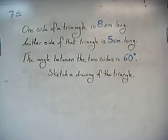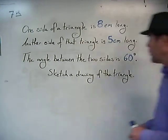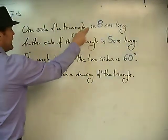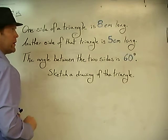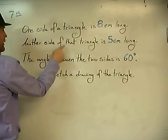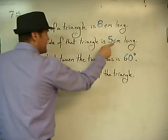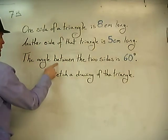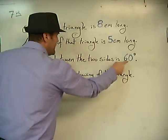Hello, Mr. Matthew here again. So we have a question up here on the board. One side of a triangle is eight centimeters long. Another side of that same triangle is five centimeters long. And the angle between the two sides is 60 degrees.